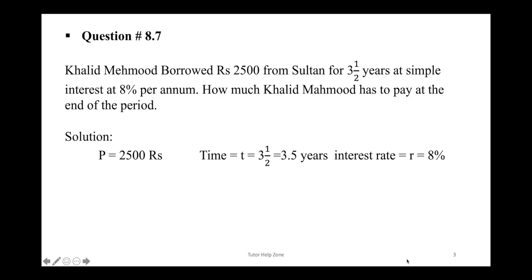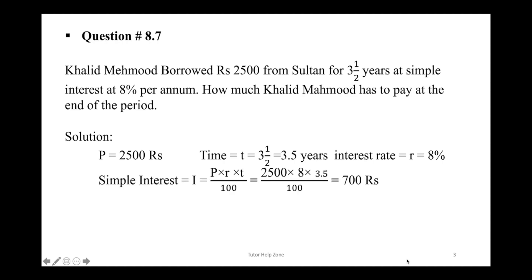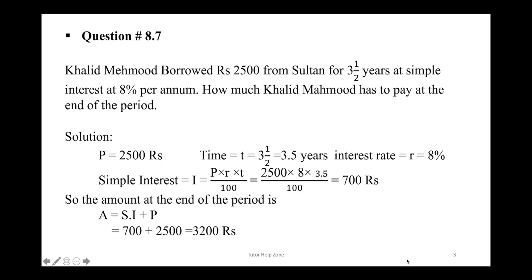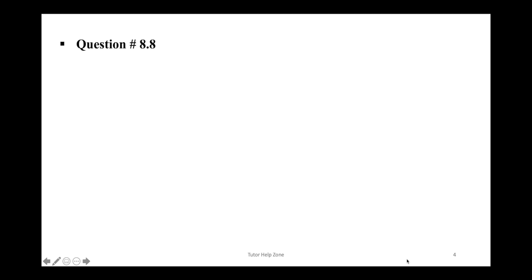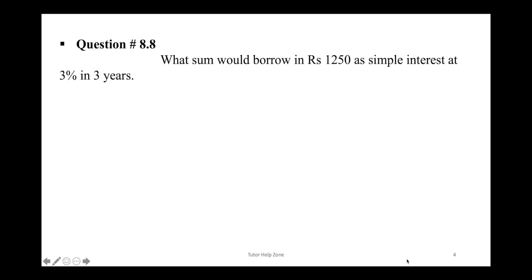The rate R is equal to 8 percent. Now we find simple interest. I = P × R × T ÷ 100. Putting in the values, the answer is Rs. 700. The amount at the end of the period equals simple interest plus principal: 700 + 2500, so the whole amount to repay at the end of the period is Rs. 3200.